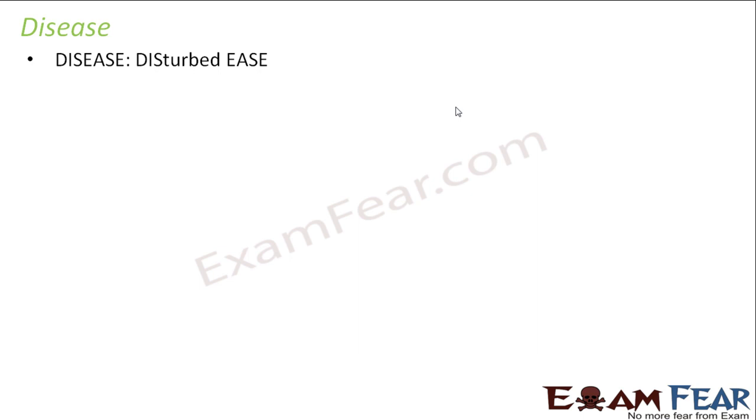Diseases are something which directly affect our physical health. We will talk about what are diseases, what are the different types of diseases, what causes them and how can we cure them. The term disease itself is a short form of disturbed ease — this disturbed ease actually makes up disease. Ease means comfort, so when you are not feeling comfortable, that means you are having some problems.